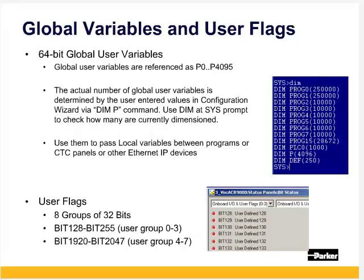Programmers have both global variables and user flags at their disposal. 64-bit global user variables are P0 to P4095 and are a dimension as part of the configuration wizard on the memory screen. The default is 4096 parameters. Use them to pass local variables between programs, CTC panels, or other Ethernet IP devices. There are also eight groups of 32-bit user flags, starting at bit 128 going up to 255, and also bit 1920 to 2047.